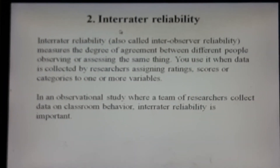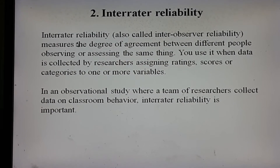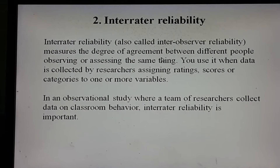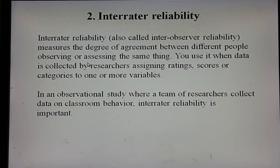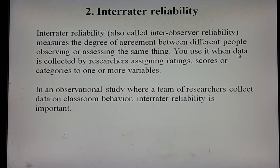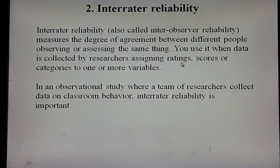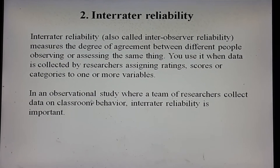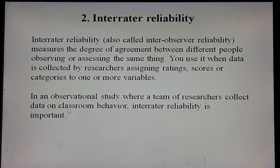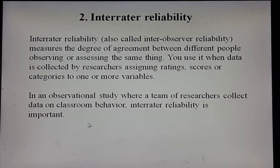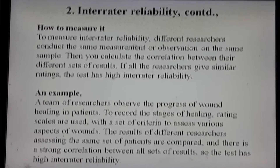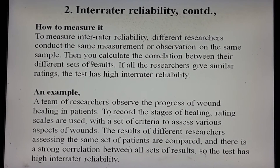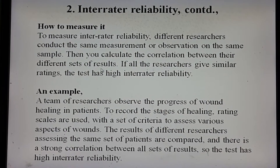The second type of reliability is inter-rater reliability, also called inter-observer reliability. It measures the degree of agreement between different people observing or assessing the same thing. You use it when data is collected by researchers assigning ratings, scores, or categories to one or more variables. In an observational study, different researchers conduct the same measurement or observation on the same sample, then you calculate the correlation between their different sets of results.